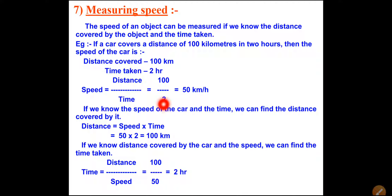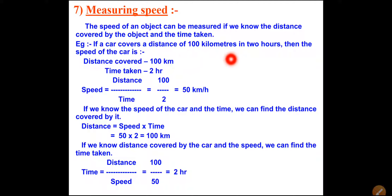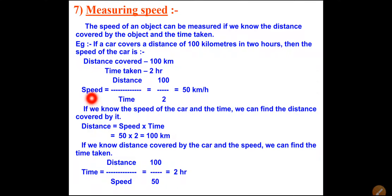Now, how can we measure speed? The speed of an object can be measured if we know the distance covered by the object and the time taken. To calculate the speed of any vehicle, we need to know how much distance was covered and what time was required. Suppose a car covers 100 kilometers in two hours - such questions will appear in the exam. You write the given data: distance = 100 km, time = 2 hours, and then the formula.